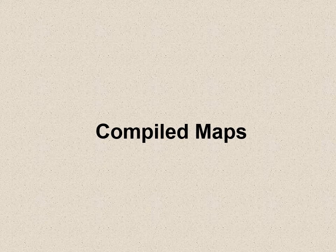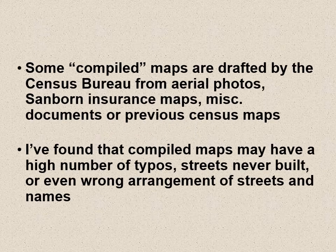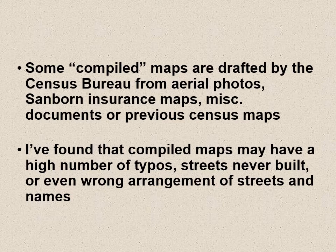There's another type of map you will see called a compiled map. Some compiled maps are drafted by the Census Bureau from aerial photos, Sanborn insurance maps, and miscellaneous documents — which may include previous census maps. I found that compiled maps may have a high number of typos, streets never built, or even wrong arrangements of streets and names.